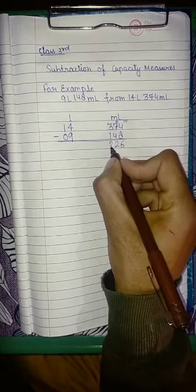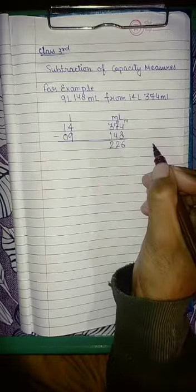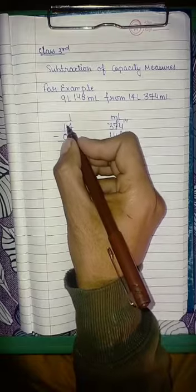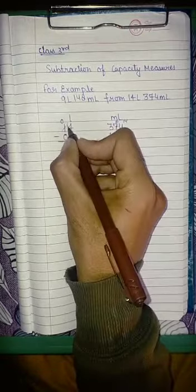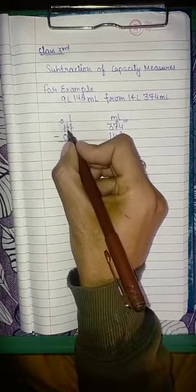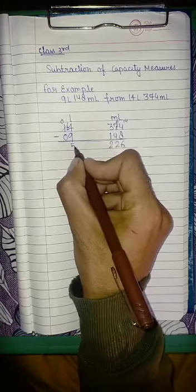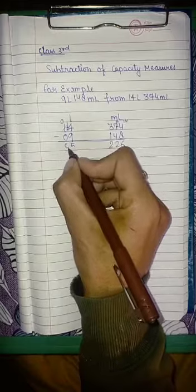Now 4 cannot subtract 9, so we will take 1 borrow from here, so it will become 0 and this will become 14. Now 14 minus 9, what we will get? That we will get 5, and 0 we will put over here. So the answer is 5 liter 226 milliliter.